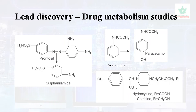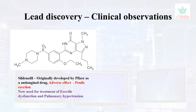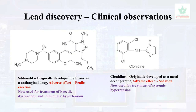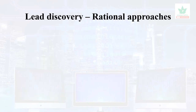Some leads are identified based on clinical observations. The famous example is sildenafil, originally developed by Pfizer as an anti-anginal drug — the adverse effect of penile erection is now its main use, for treatment of erectile dysfunction and pulmonary hypertension. Clonidine was originally developed as a nasal decongestant; its adverse effect of sedation led to its use for treatment of systemic hypertension and as a sedative and tranquilizer.